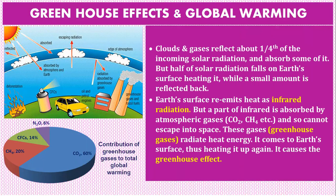Earth's surface re-emits heat as infrared radiation, but a part of that infrared is absorbed by atmospheric gases like carbon dioxide, methane, CFC, nitrous oxide, etc., and so cannot escape into space. These gases radiate heat energy back to Earth's surface, heating it up again. This causes the greenhouse effect, and thus these gases are known as greenhouse gases.